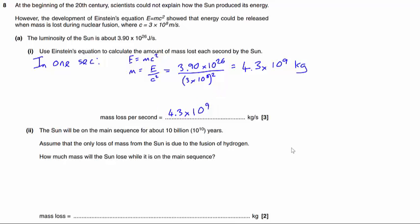Part 2 says that the sun will be on the main sequence for about 10 billion years. Assume that the only loss of mass in the sun is due to the fusion of hydrogen. How much mass will the sun lose while it is on the main sequence?